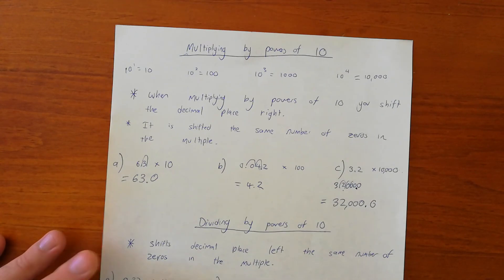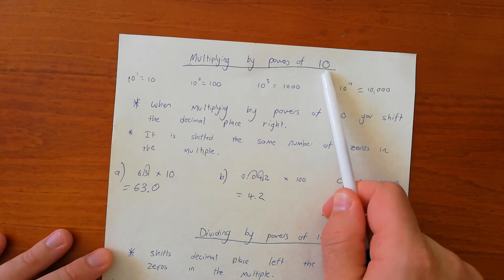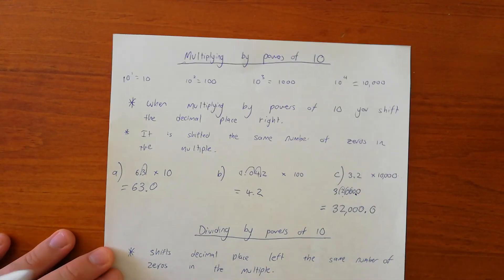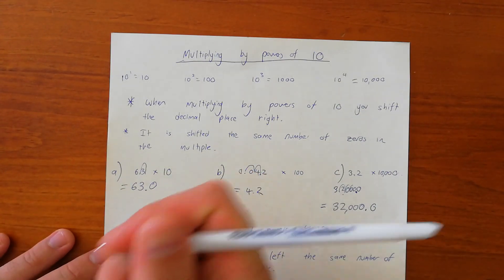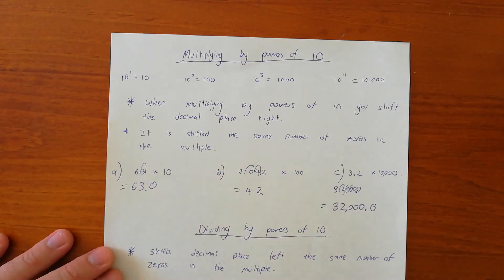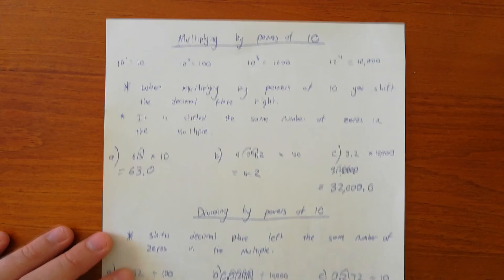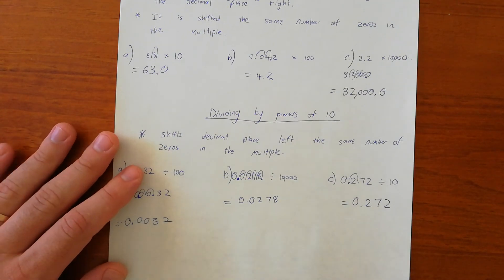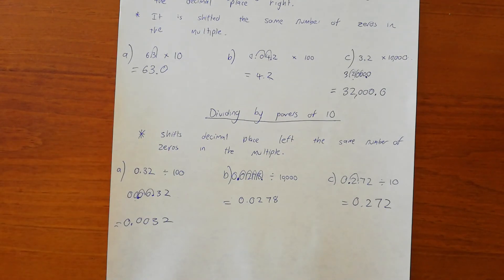So in summary: if you're multiplying by a power of 10, you shift the decimal to the right by that many zeros. If you're dividing by a power of 10, you shift it to the left by that many zeros.